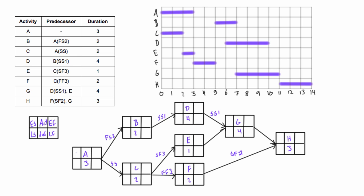For activity A, it starts at the beginning, so we have zero plus three - early finish is three. For B, it's a finish-to-start relationship with a lag of two, so activity B's earliest start is two days after A's early finish. Three plus two gives us five, and five plus two is seven for the early finish. For D, with a start-start and lag of one coming off of B, activity D can start one day after B starts, so it will start on six. Six plus four gives an earliest finish of ten.